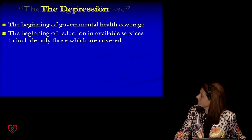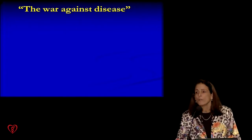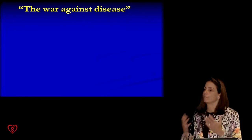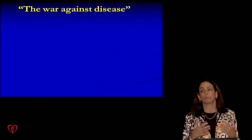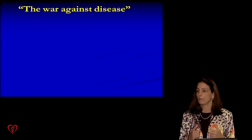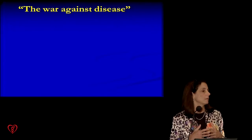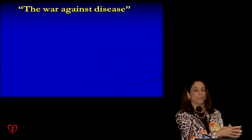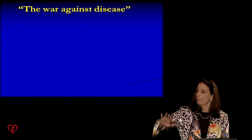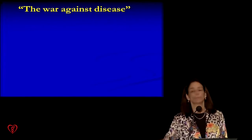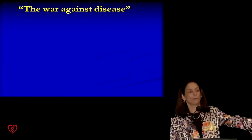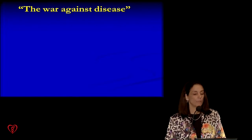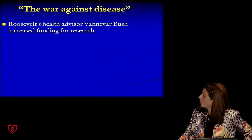Then we had the Great Depression, which led to one good thing: the idea of getting all Americans covered in their old age so they wouldn't have to worry about being sick without healthcare. That ultimately led to Medicare. But the problem was Medicare led to 'we'll pay for this and we won't pay for that.' We hit this reductionist approach — we'll pay for surgery, some drugs, physical therapy, but not exercise, nutrition, acupuncture, or homeopathy. So we ended up with what they called the war against disease.